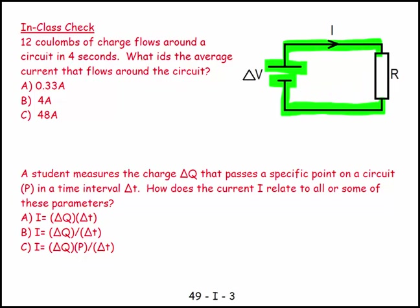In this question, we say 12 coulombs of charge flows around a circuit in 4 seconds. What is the average current that flows around the circuit? So my charge is equal to 12 coulombs, and my delta T is equal to 4 seconds. And I, well, let's call this delta Q.